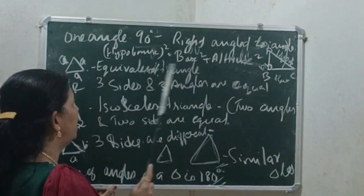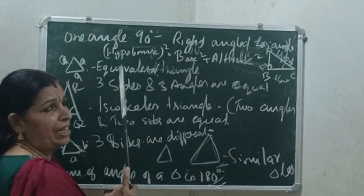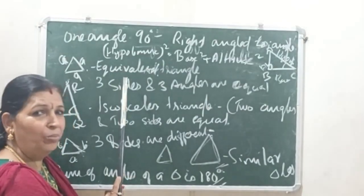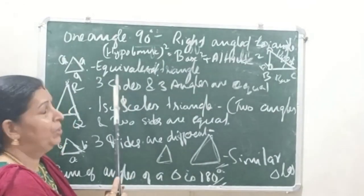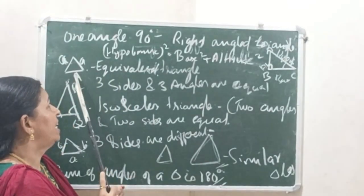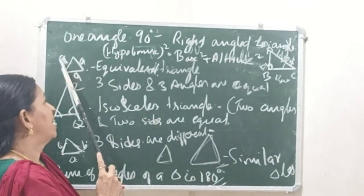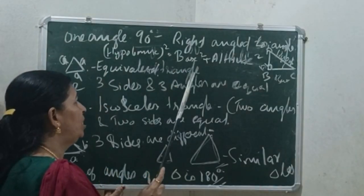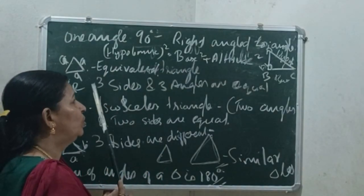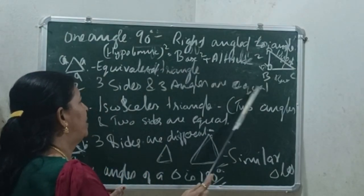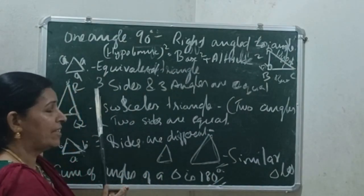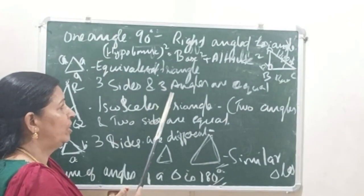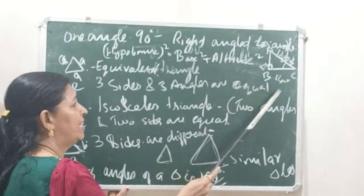Equilateral triangle: if you have 3 sides, all 3 sides are the same. The 3 angles are also the same.